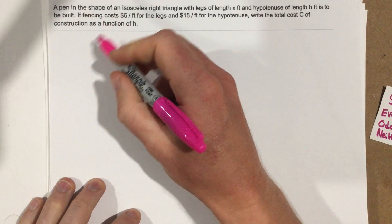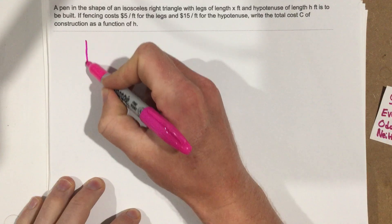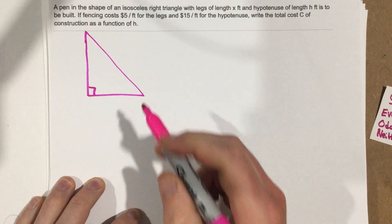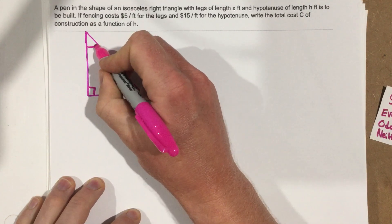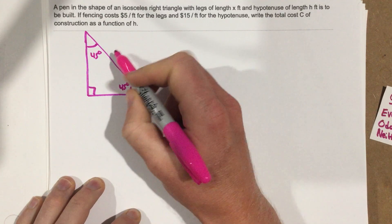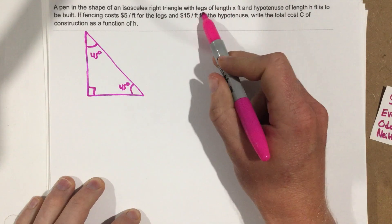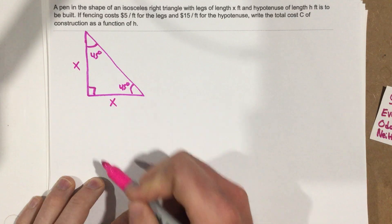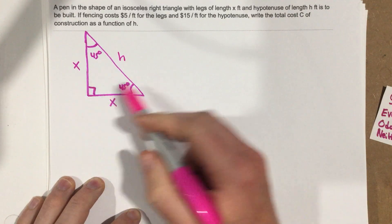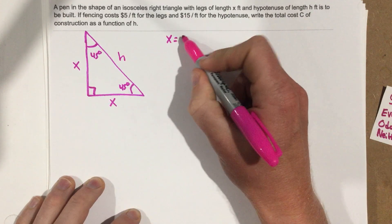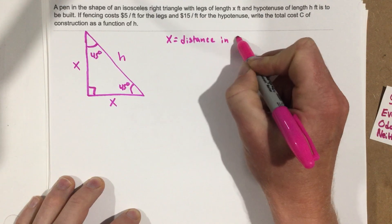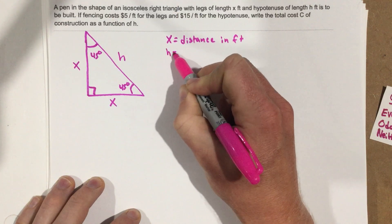First of all, we need to write what an isosceles right triangle is. An isosceles right triangle means we have a right angle, and isosceles means that our angles here are both 45 degrees. So we have X and X for the legs, which are the exact same length, and the hypotenuse is length H. Now remember, X equals distance in feet and H is distance in feet.